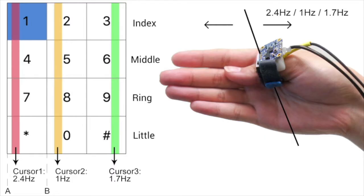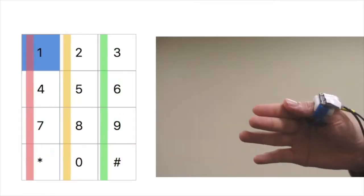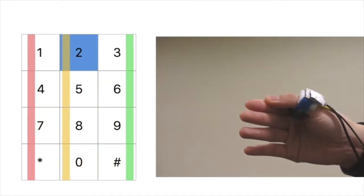Users wear a thumb ring that contains a contact microphone and communicates with the wearable. Through rubbing their thumb against the remaining fingers, the user performs specific input gestures that serve as input modality.